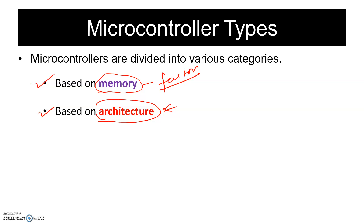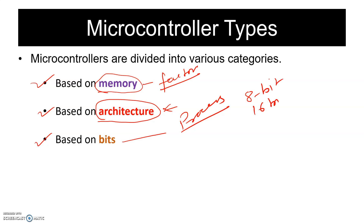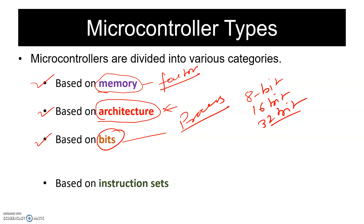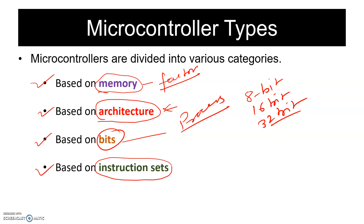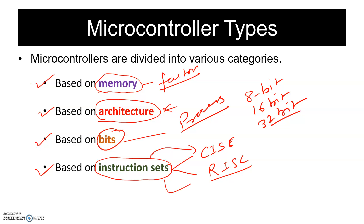The next type of microcontroller is identified based on bits — the number of bits the microcontroller is processing. You can say 8-bit, 16-bit, or 32-bit microcontroller. The last category is instruction set — based on the type of instruction set, you can classify the microcontroller as CISC or RISC. We will discuss these two in detail in the coming slides.